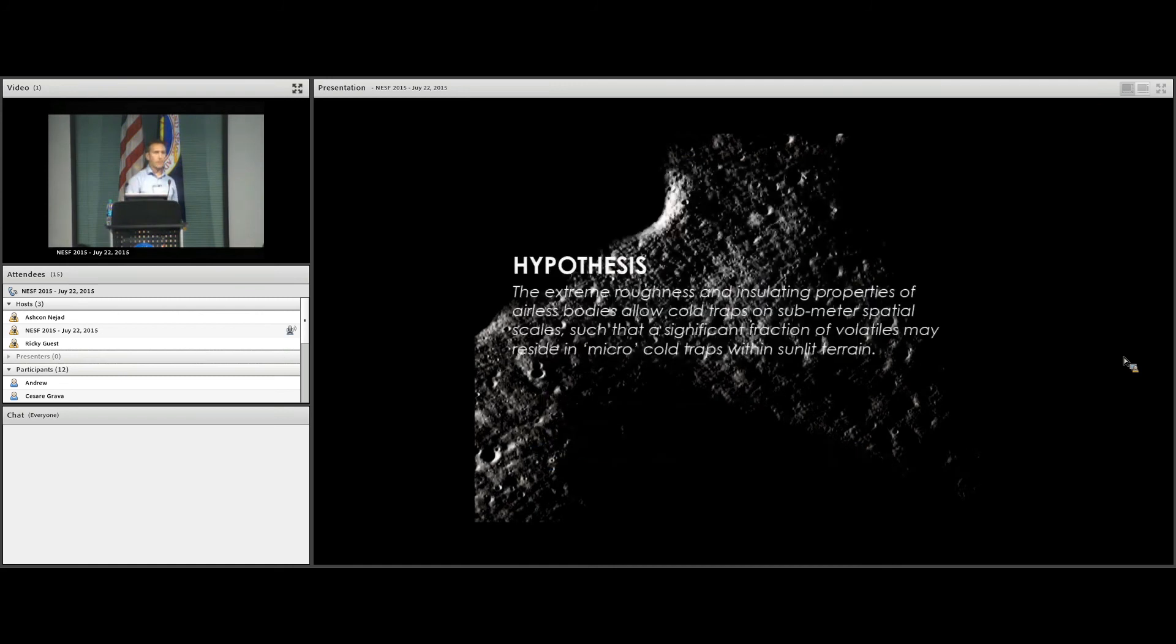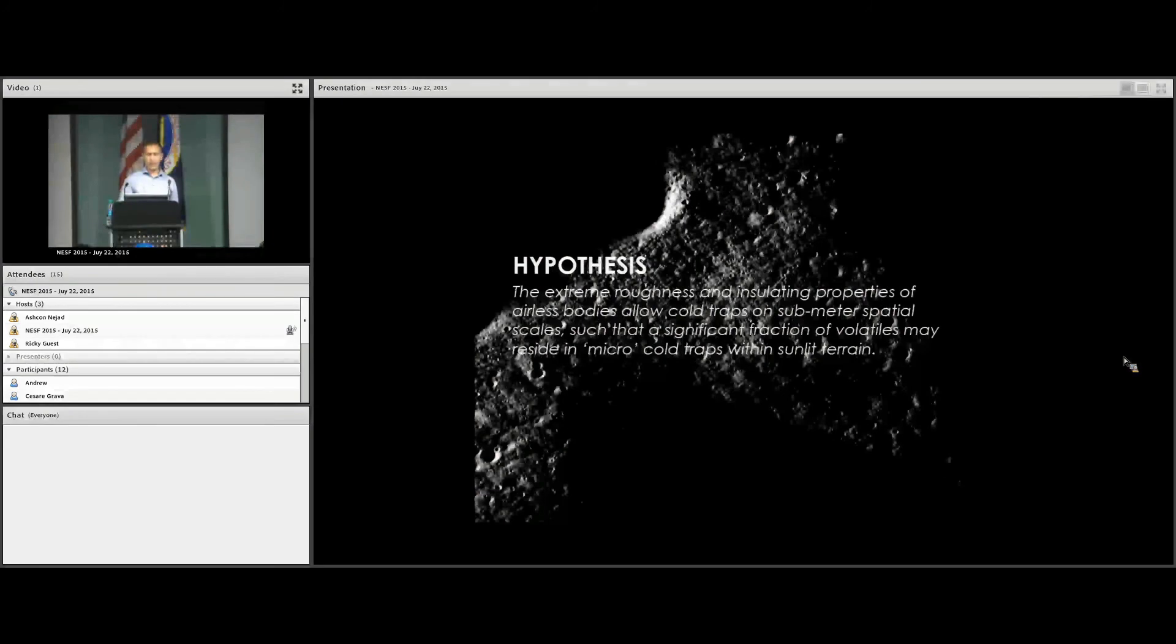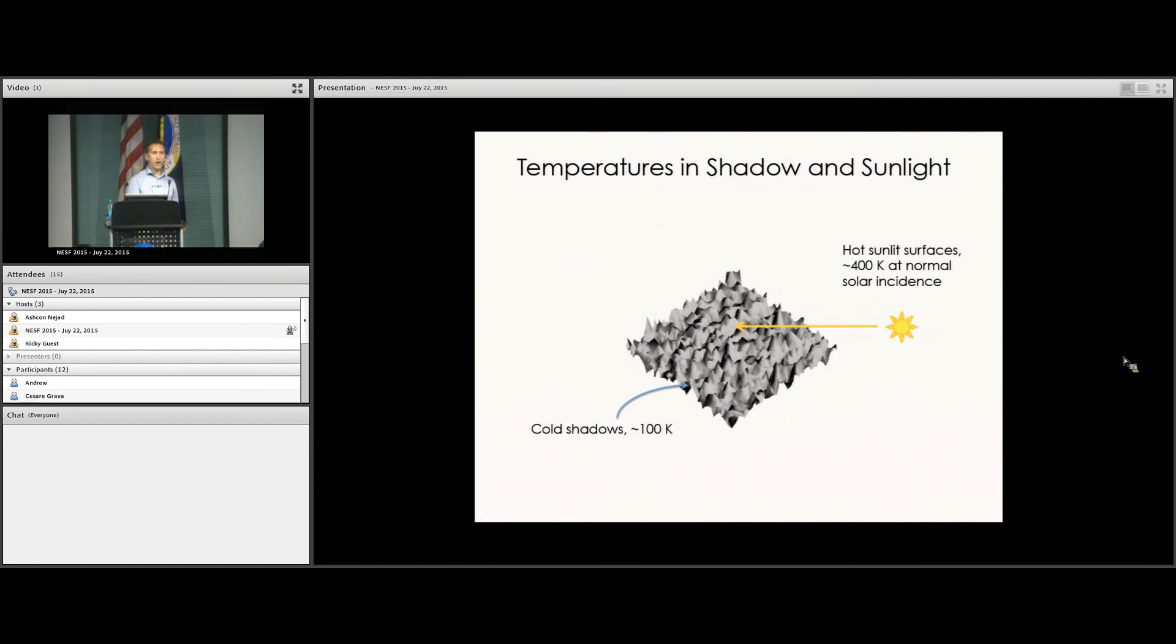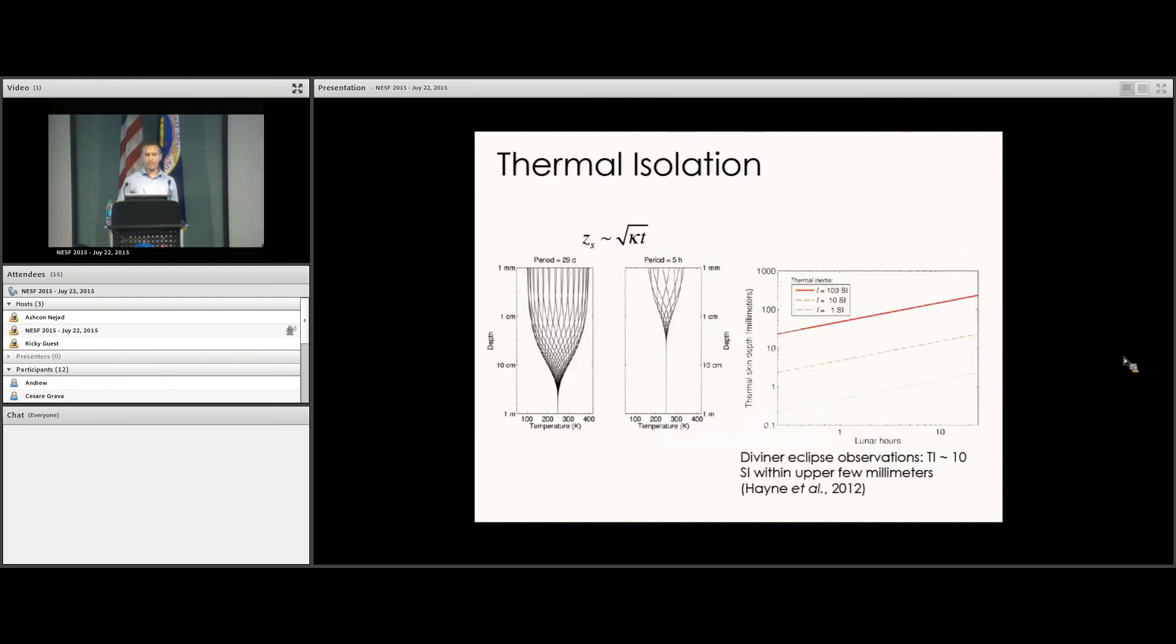The third possibility that I'm going to investigate here is that what you're seeing is actually ice—macroscopic ice particles—in unresolved permanent shadows at scales smaller than what we can see with orbiting spacecraft. This is the hypothesis: the extreme roughness and insulating properties of airless bodies, especially the moon, allow cold traps on these very small scales. A significant fraction of the volatiles that exist in the polar regions exists in these micro cold traps. Basically on a rough surface, only the facets exposed to the sun will heat up, and those in shadow can maintain very low temperatures despite being nearby illuminated surfaces. The shadows can be 100 Kelvin and nearby you've got a surface that's 400 Kelvin where water and other volatiles are not stable.